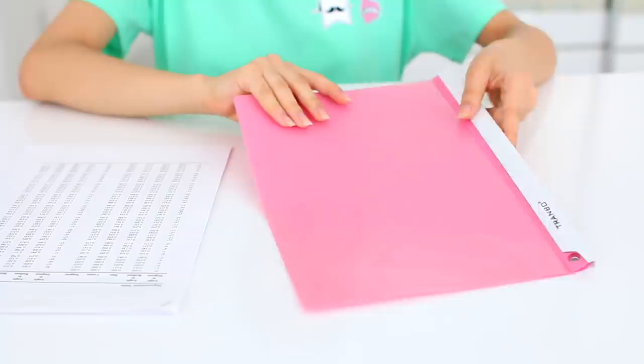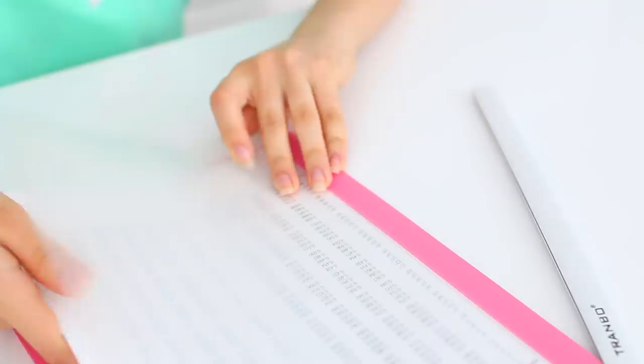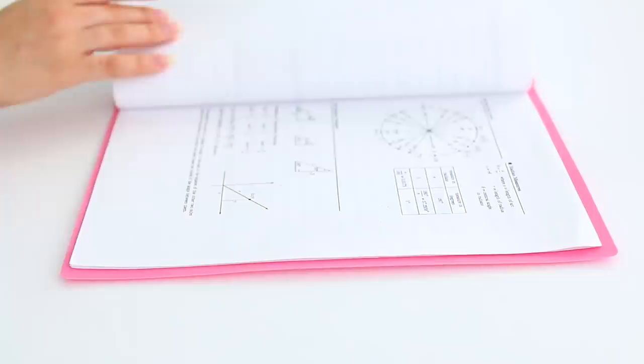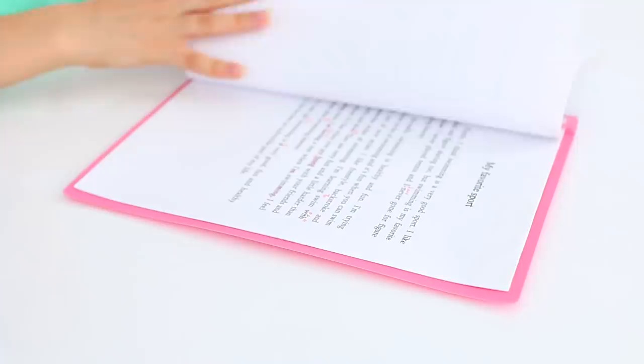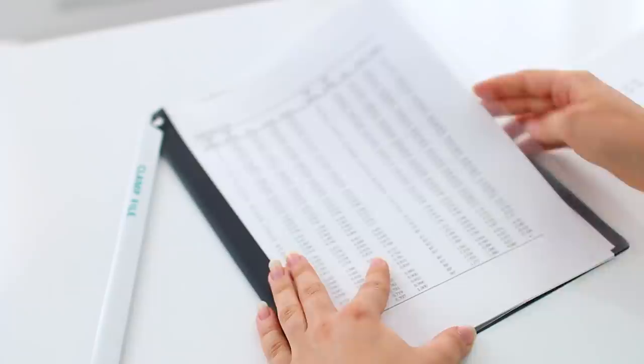So I highly recommend hole punching any papers that you can and putting them directly in your binder. If you cannot do that, then I recommend using folders that have binding on the side. The advantage of these folders is that you're able to flip through the pages and access the information without having to take anything out.